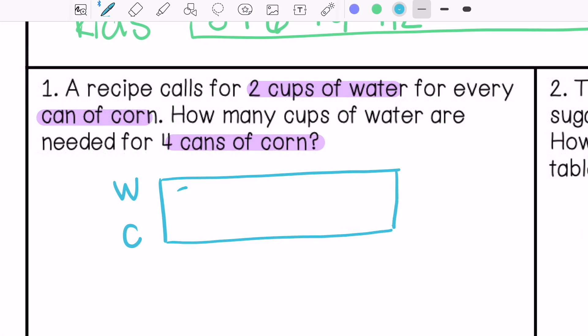Two cups of water for one can of corn. If we have four cups of water, we have two cans of corn. Six cups of water, we have three cans of corn. Eight cups of water, we have four cans of corn. So eight cups of water.